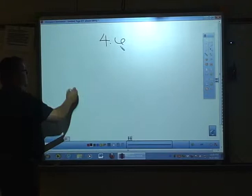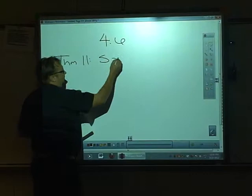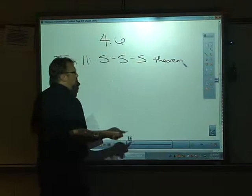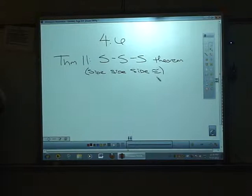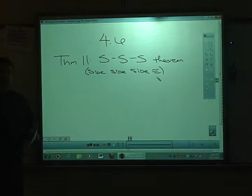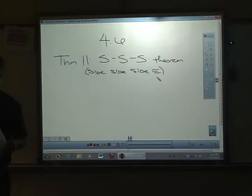We're starting with our last theorem in this section, which is theorem 11, which is the SSS theorem, which hopefully you realize means side, side, side. And this is for congruency for triangles. You should have already had side angle side and angle side angle, so this is the third one dealing with triangles. The only ways you know to show triangles are congruent right now are side angle side, angle side angle, side side side. Well, you will after this.